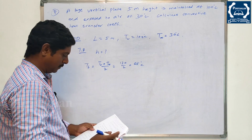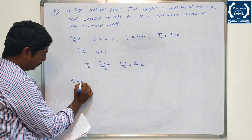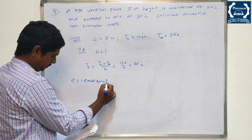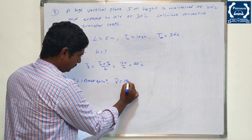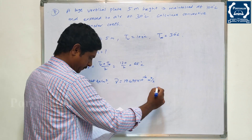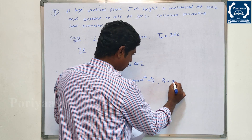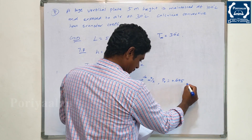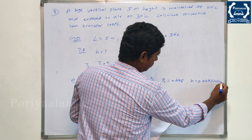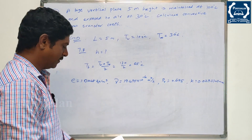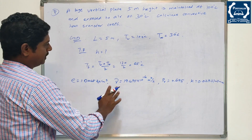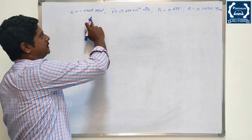From the data book at 60 degrees Celsius, the properties are: density ρ equals 1.0445 kg/m³; kinematic viscosity ν equals 19.495 × 10⁻⁶ m²/s; Prandtl number Pr equals 0.695; thermal conductivity k equals 0.02931 W/m·K. These four properties — density, viscosity, Prandtl number, and conductivity — will be used in the solution.